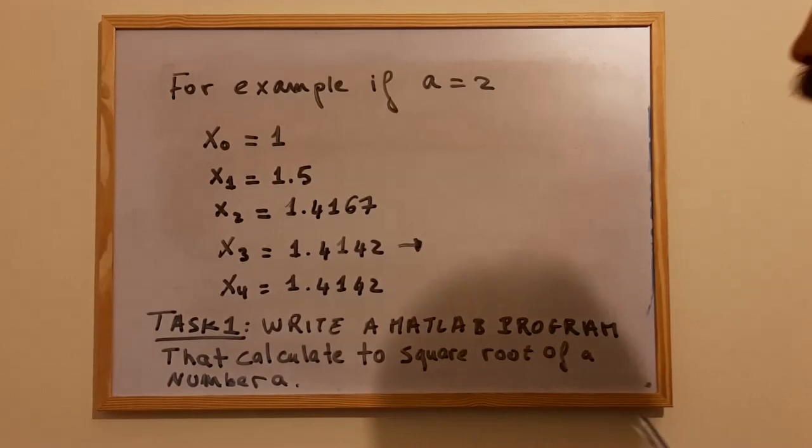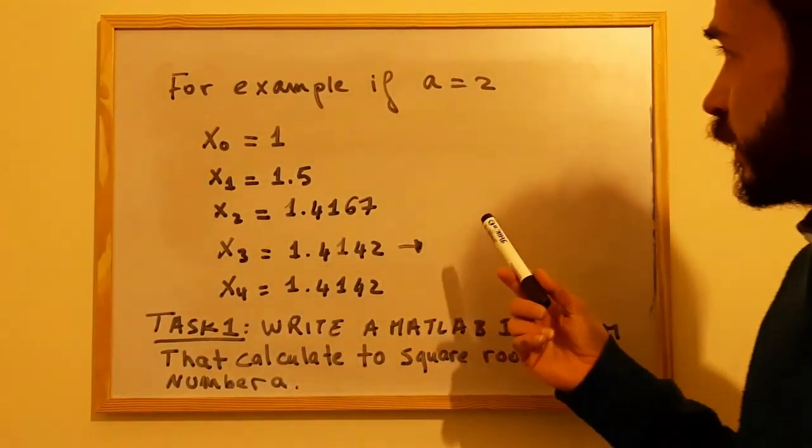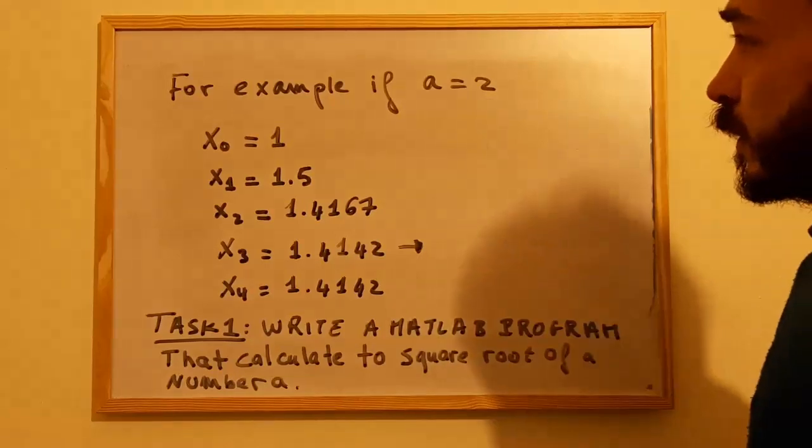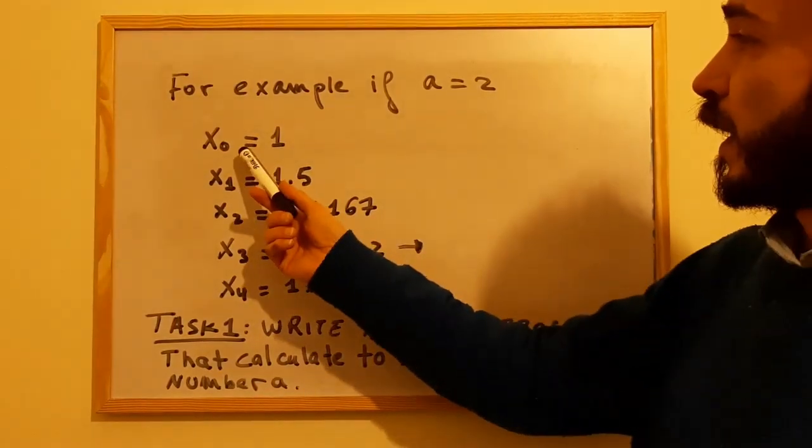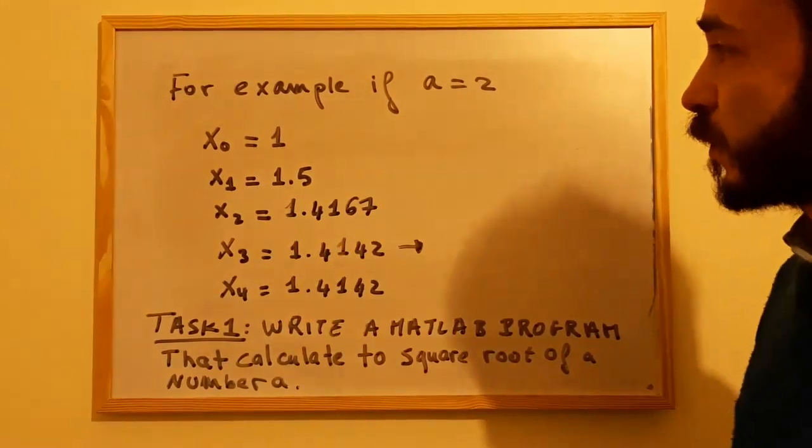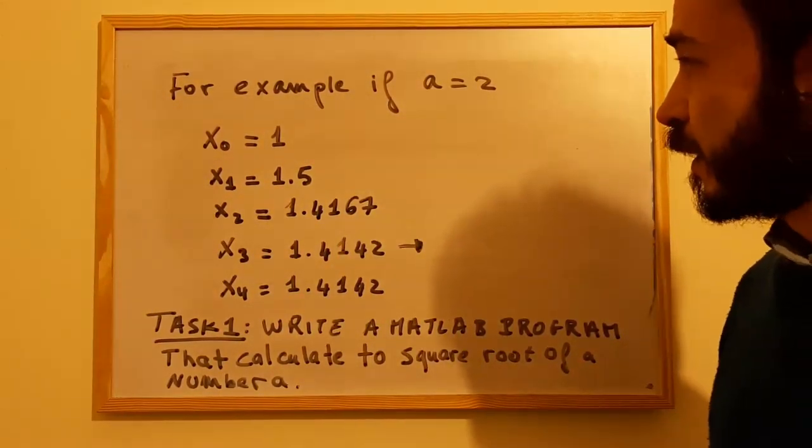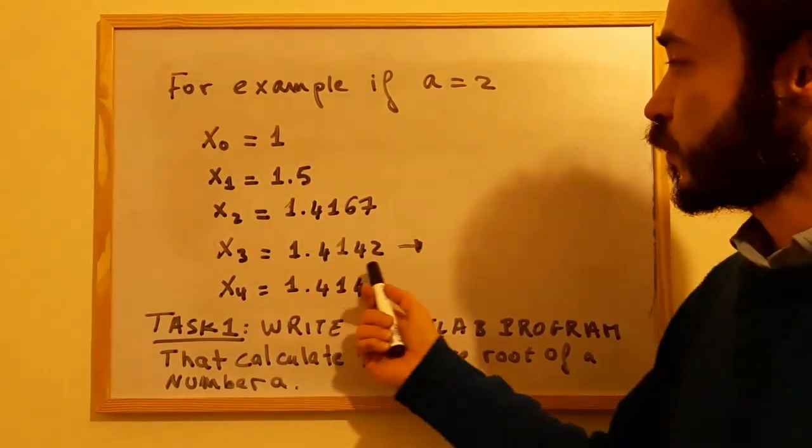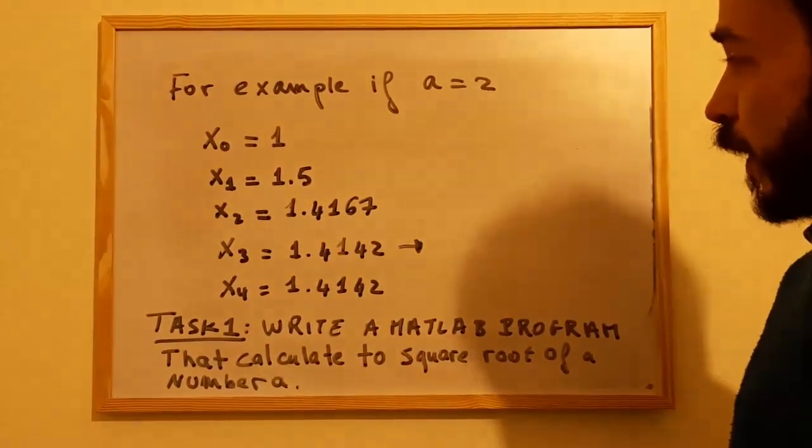This is what you should get. If we take for example a = 2 and we start from x0 = 1, at the next step we will have x1 = 1.5, x2 = 1.4167, x3 = 1.4142, etc.